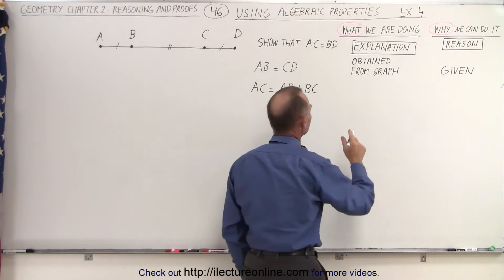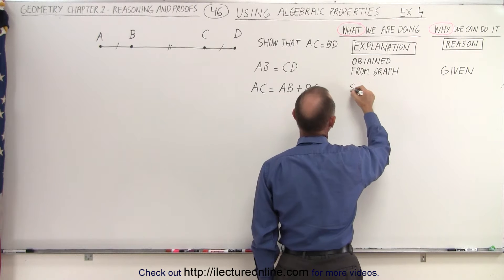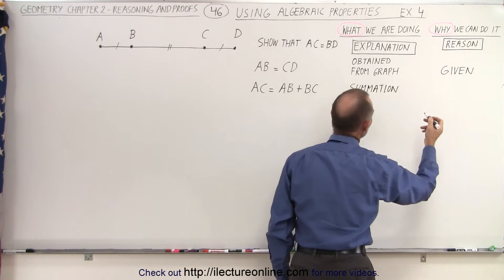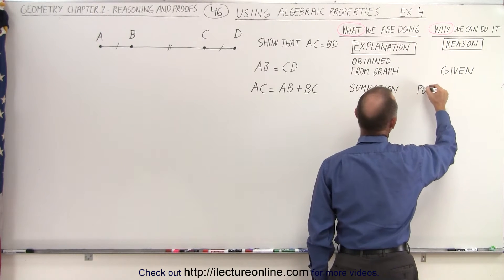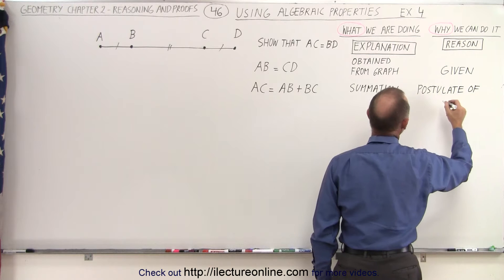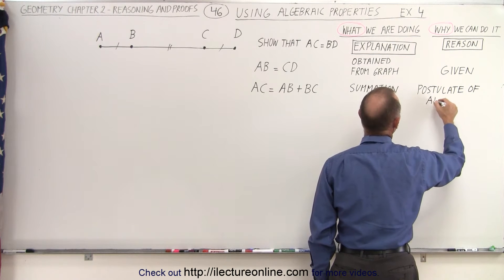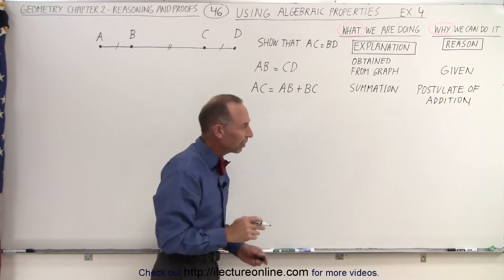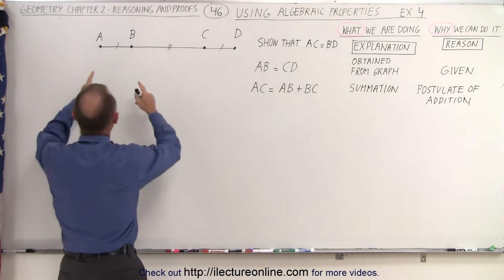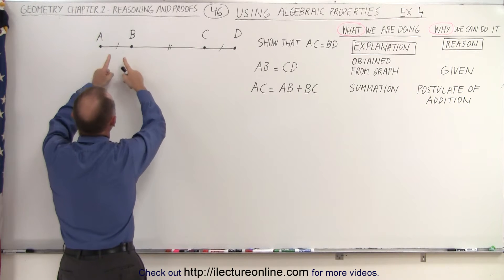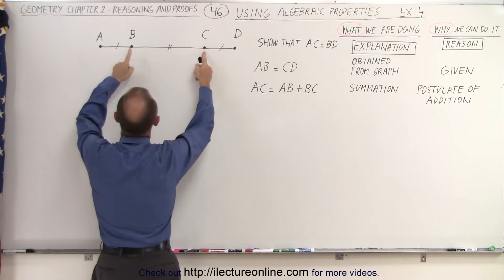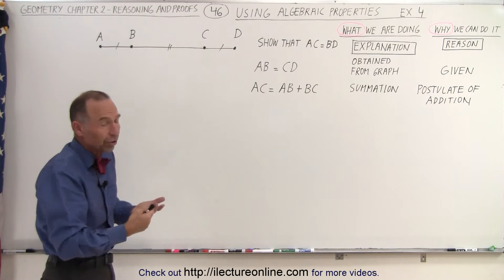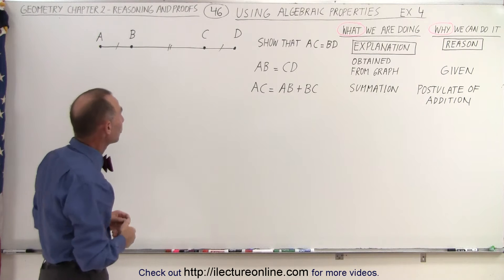What we're doing here is the summation of two line segments, and we can use the postulate of addition as the reason why we're able to do that. When we use the postulate of addition, it's self-evident that if we add the distance from A to B to the distance from B to C, that equals the distance from A to C. That's why we can call it a postulate of addition — it's self-evident; we don't need to prove that.